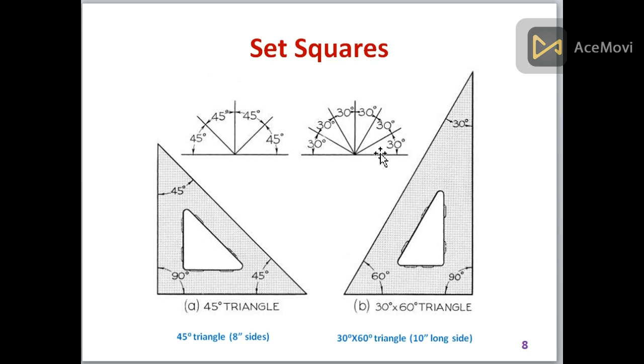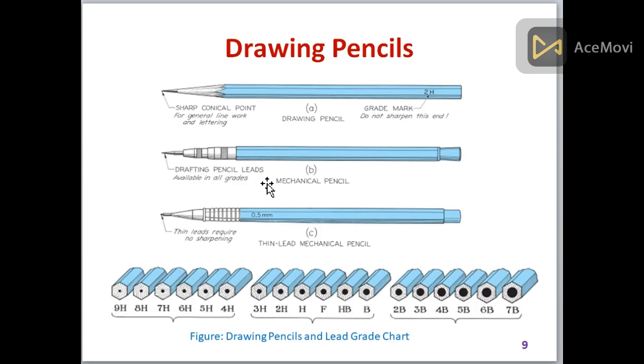With the use of set squares, we can make different angles by placing it over here or over here. These are all the things - we can make 45 degrees from this one and 30 with this one.